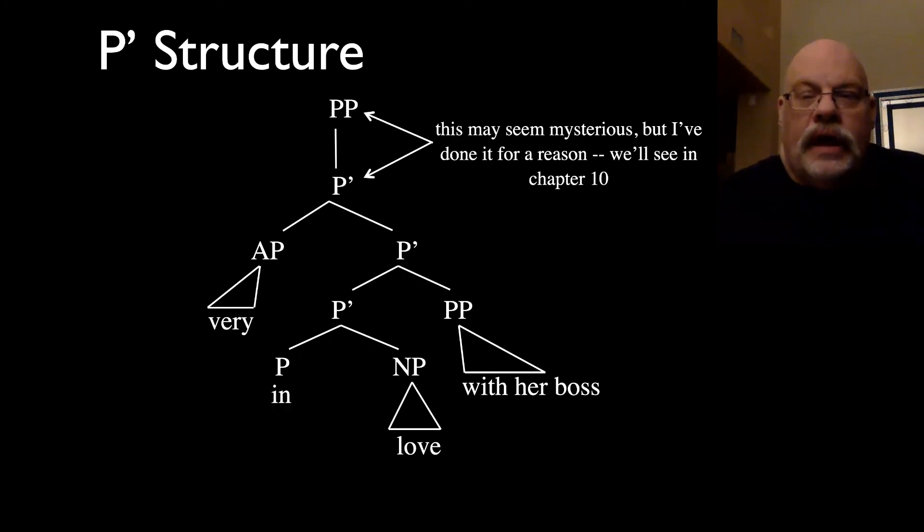So this gives us a tree like the following. Again, the top of the tree is mysterious. You're just going to have to trust me for a moment. I know that's hard, but go for it. And then we have this intermediate structure where we have three P bars. And those P bars each dominate a modifier of the preposition. So the lowest one dominates the noun phrase, typical noun phrase object of a preposition. And then the ones above it take these additional modifiers with her boss and very.